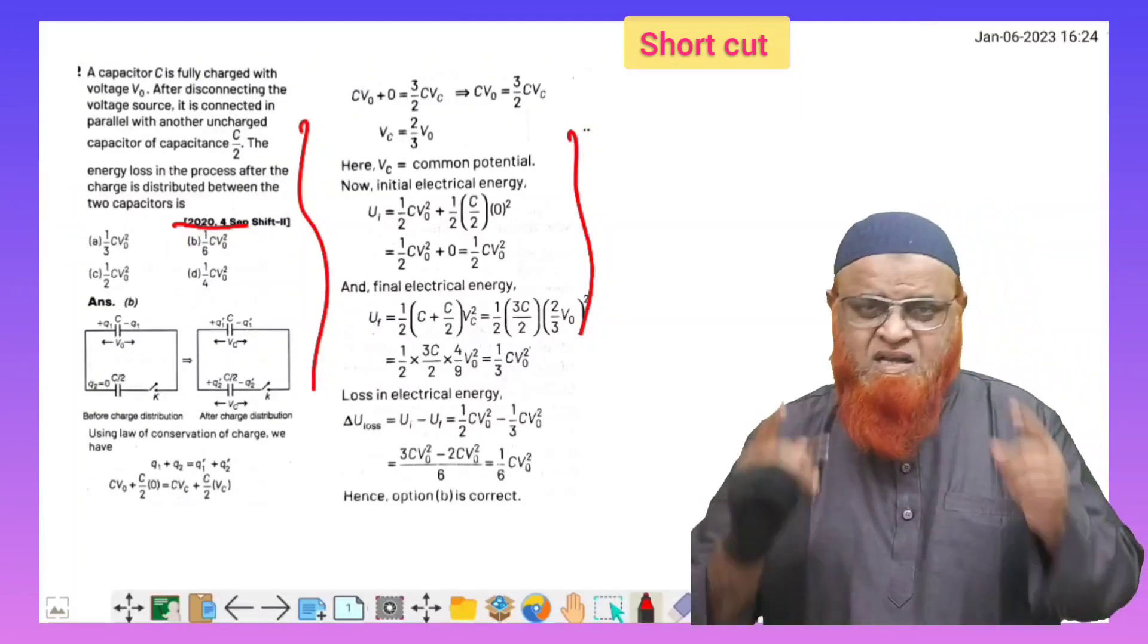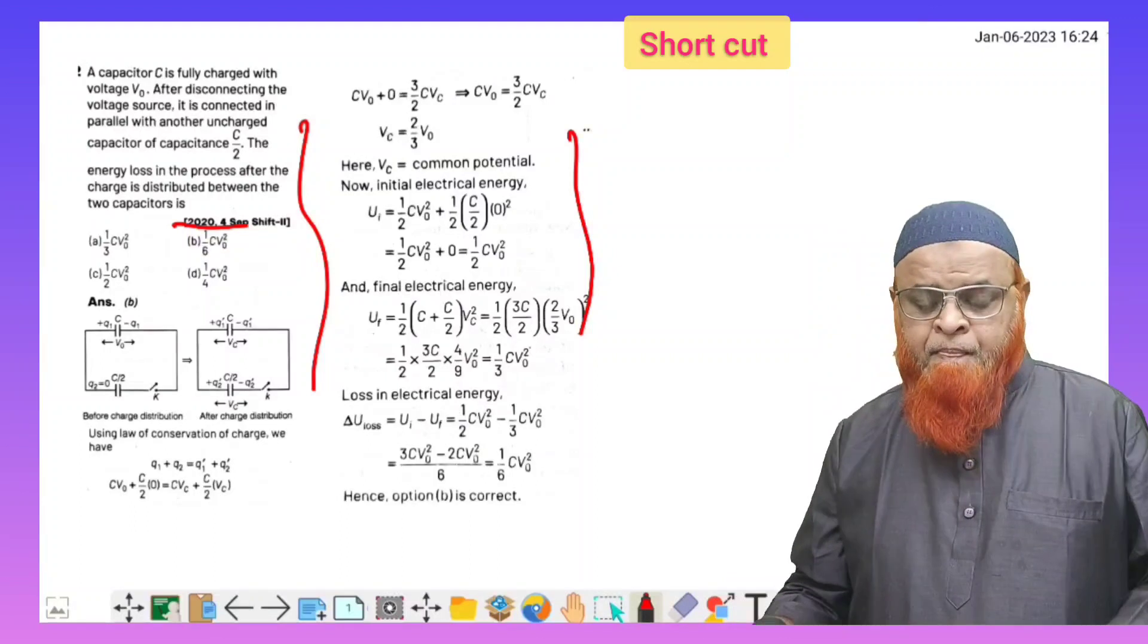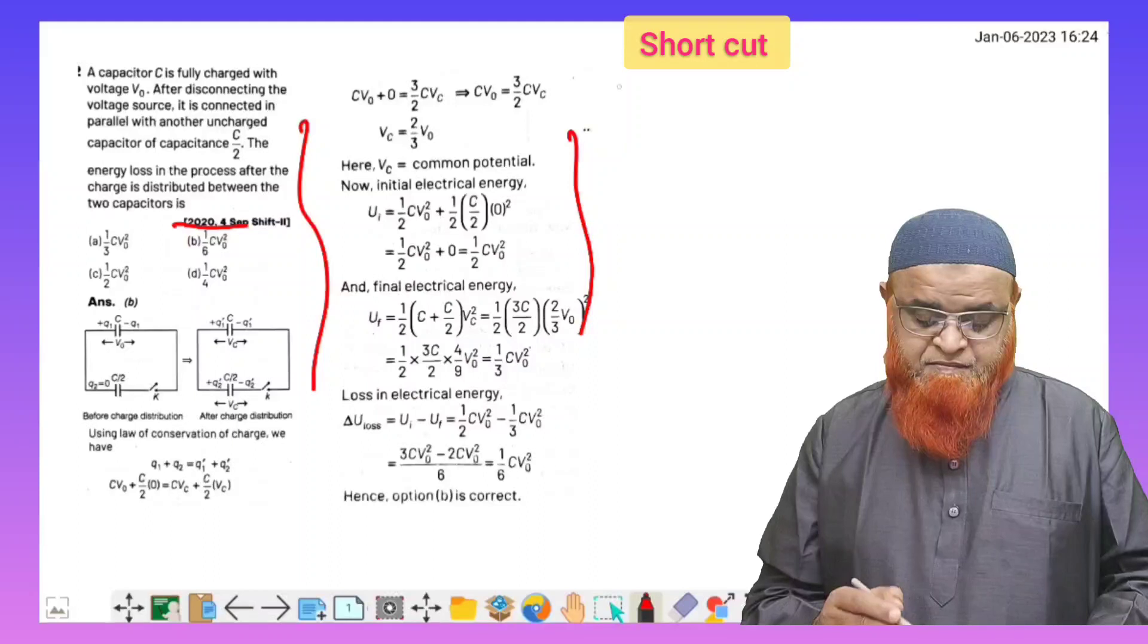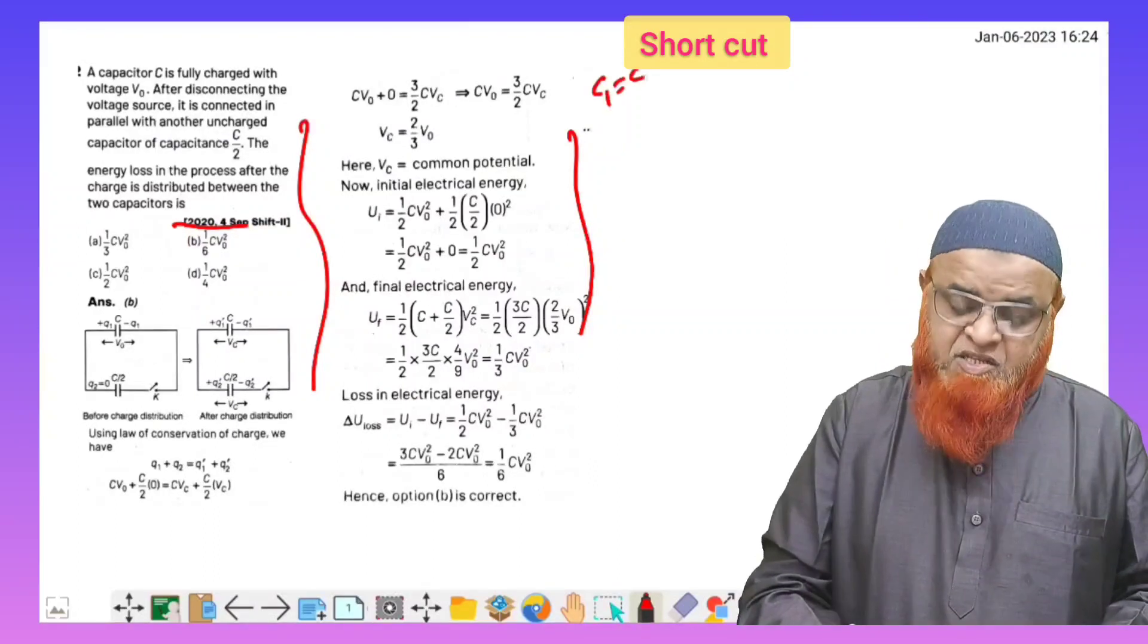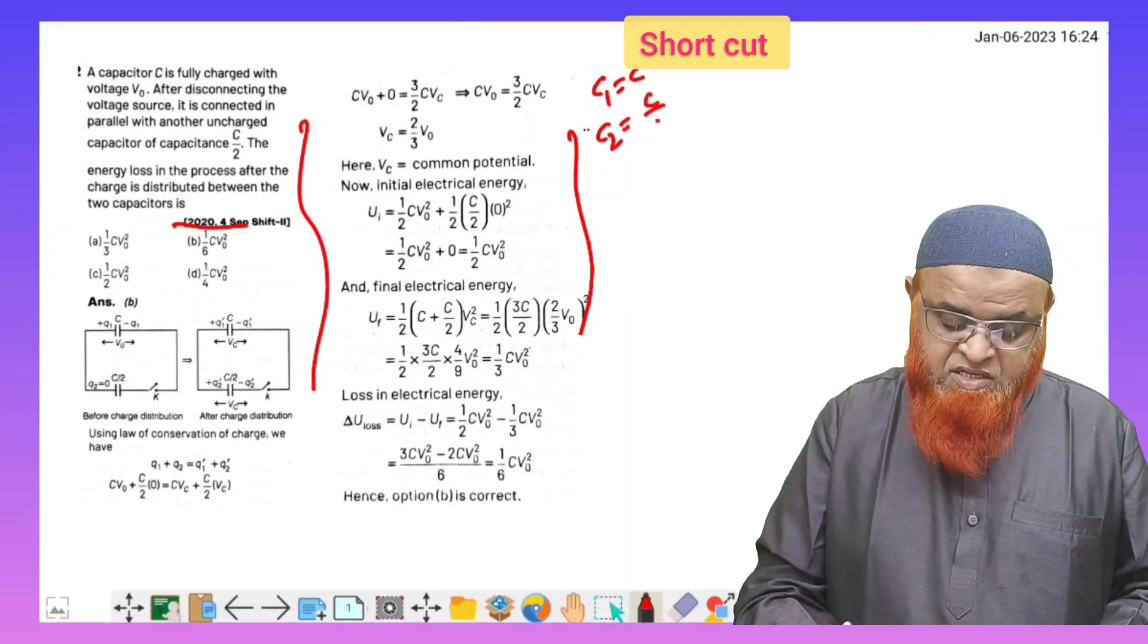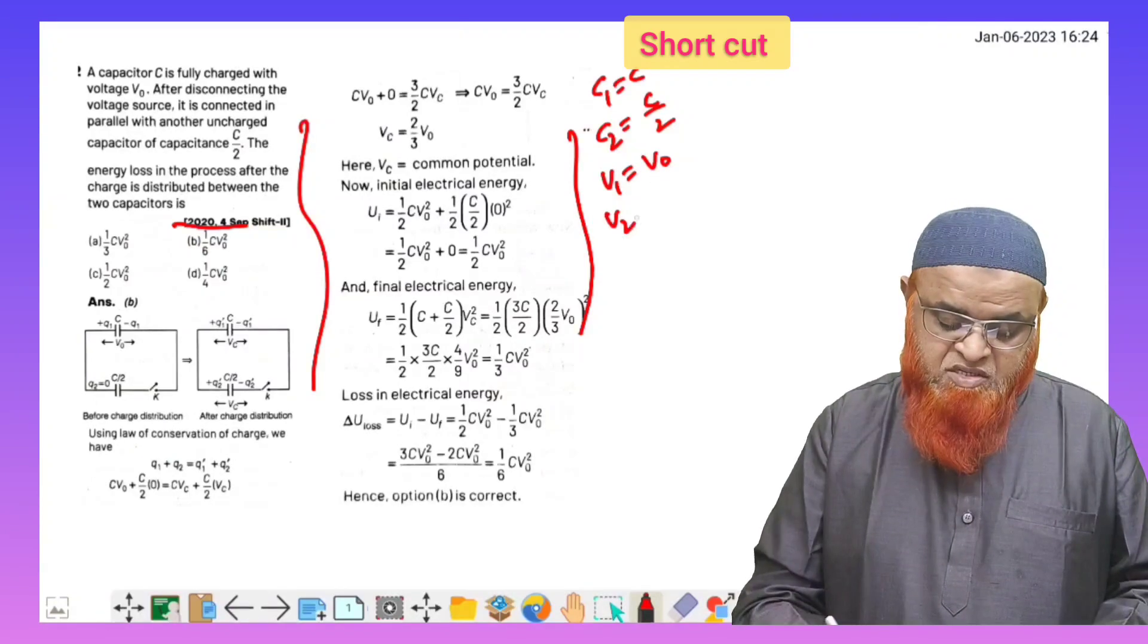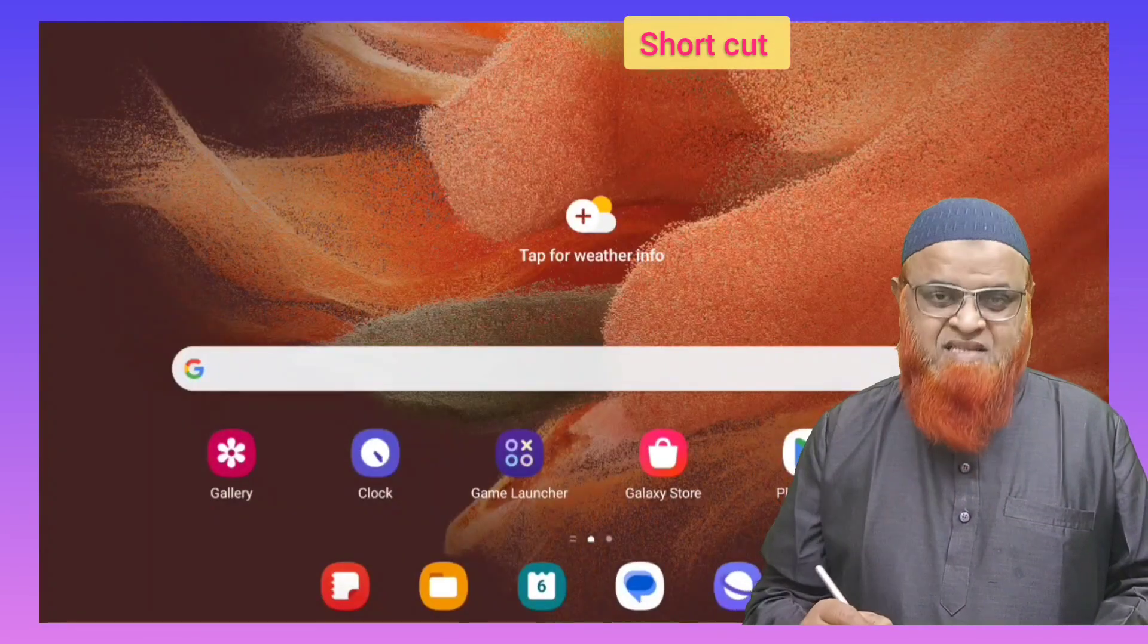What is the formula behind this? He's asking us to find out the energy loss. It is given that the capacitance C1 is taken as C and C2 is taken as C/2, whereas V1 is taken as V0 and V2 is taken as 0 according to the problem given here.